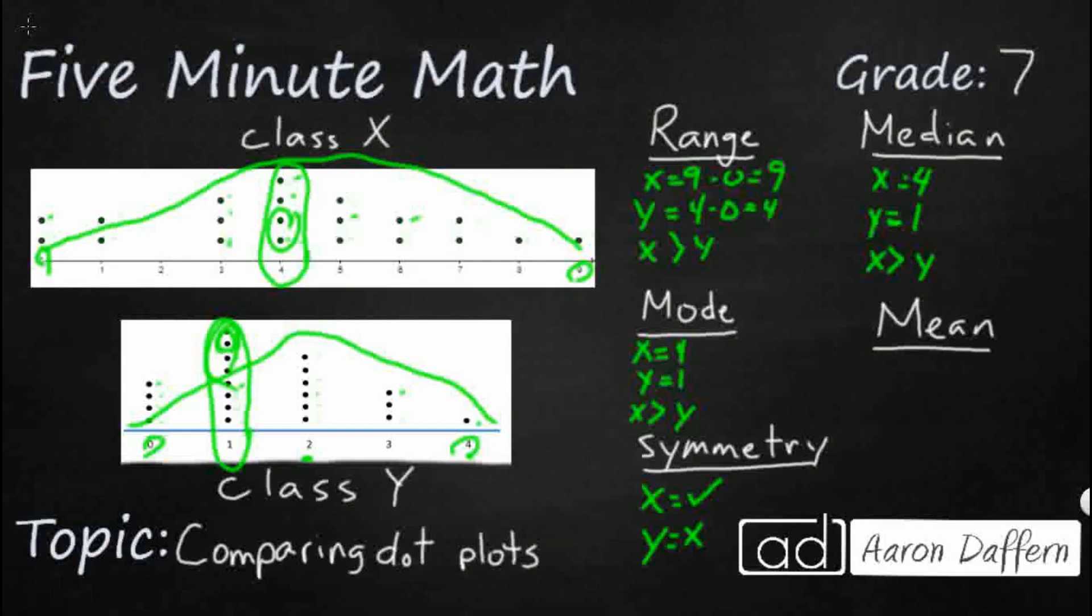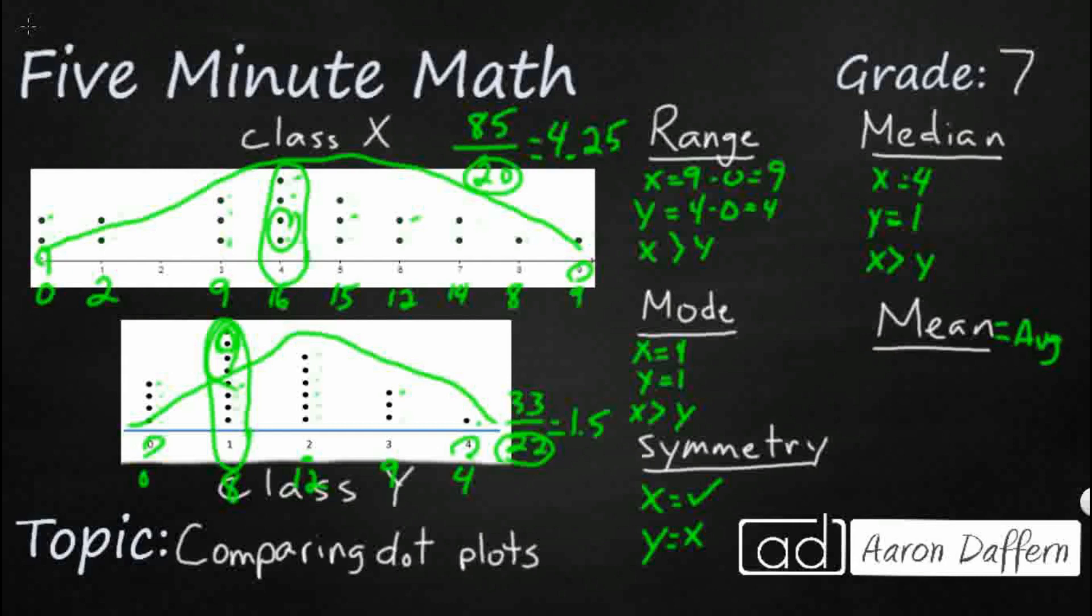And the last one we're going to be looking at is our mean. Another way to think of mean is average. So what we need to do is we need to add up all of these values for class X. So I did that down here at the bottom. So if I added all those up, so 2 1's make 2, 3 3's make 9 and so on, I get a total of 85. Now you need to divide that by how many values there were. There were 20 total values and that's going to make 4.25.